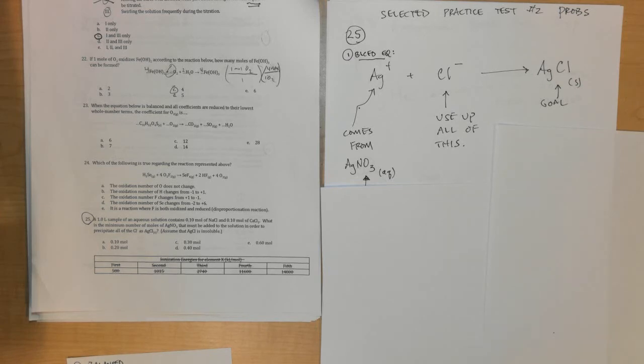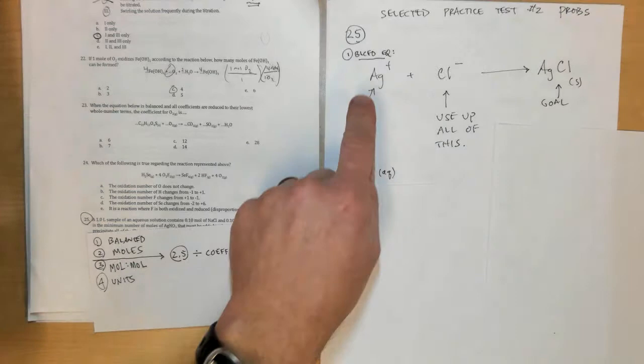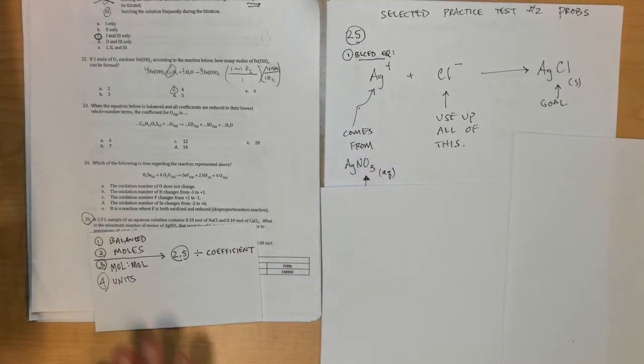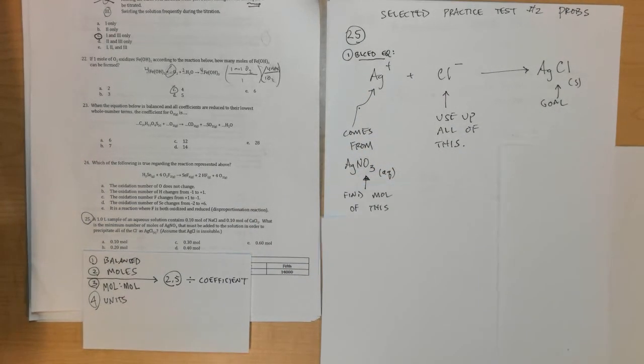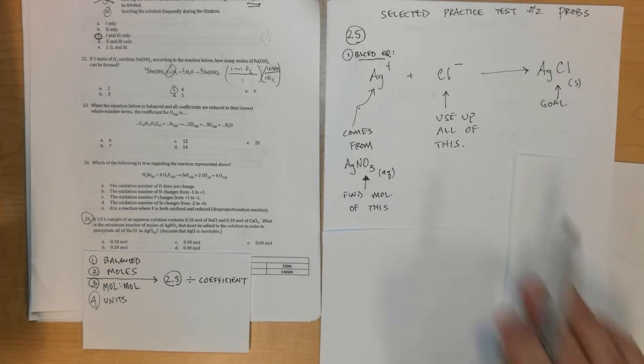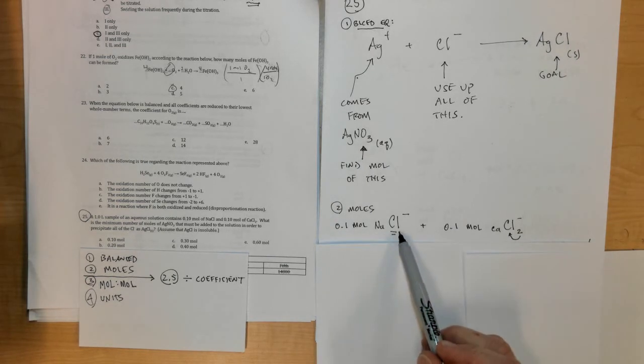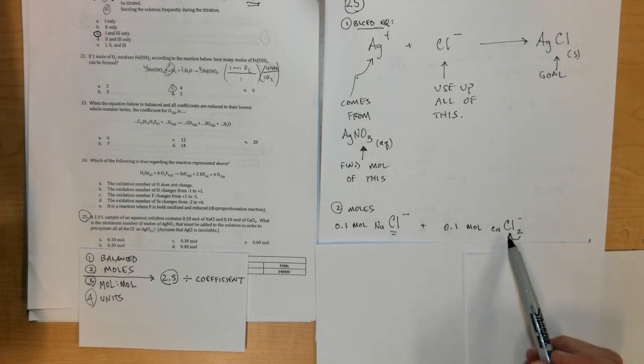Step number two is to find the number of moles of Ag and Cl minus, and they give you some information in the problem to help find the moles of both of these. First of all, what they tell you is that there is a source of chloride ion from NaCl and there's a source of chloride ion from CaCl2.